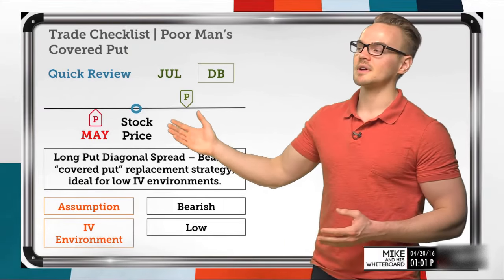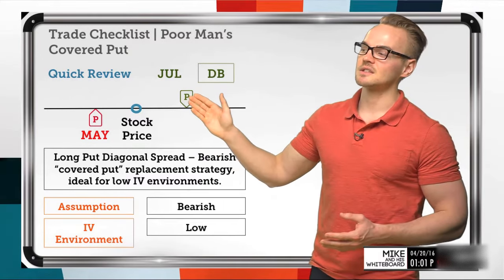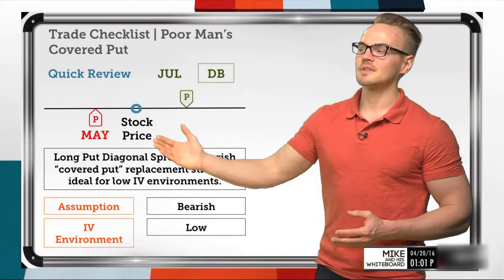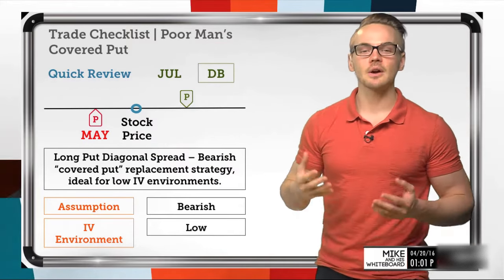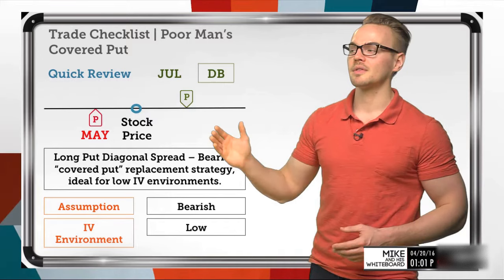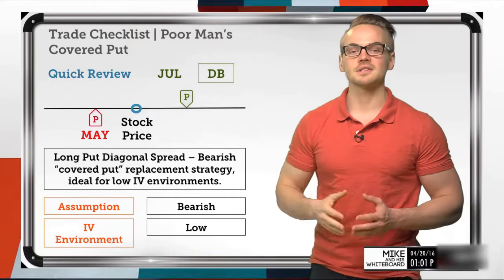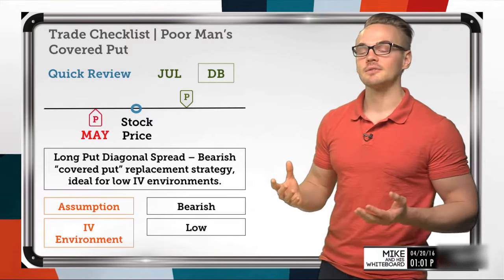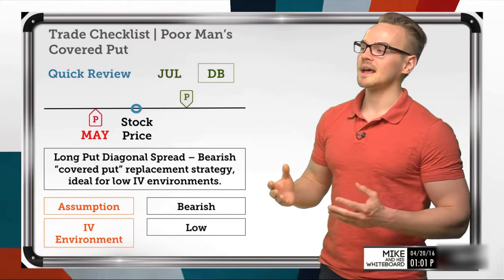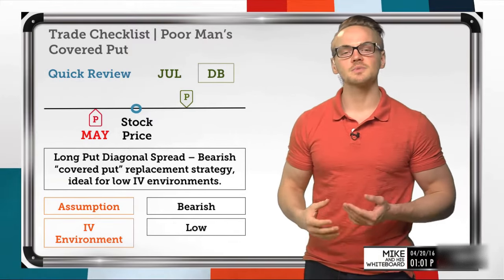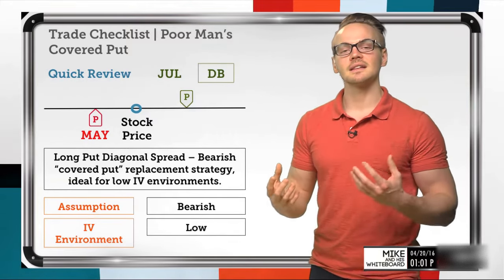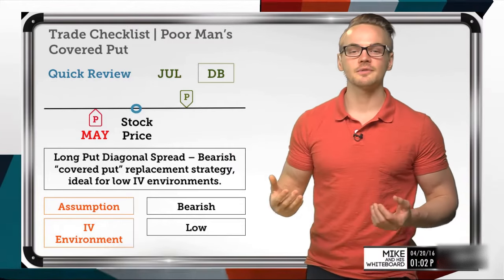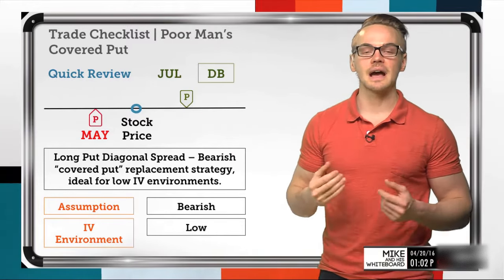With this strategy, since we're purchasing the long option and selling an option against it, even if the stock price doubles, we're not going to lose more than the debit we paid. So it's a good replacement strategy for the covered put, and it gives us a nice return on capital since we're using a lot less capital to purchase this put than we would for selling those shares outright.